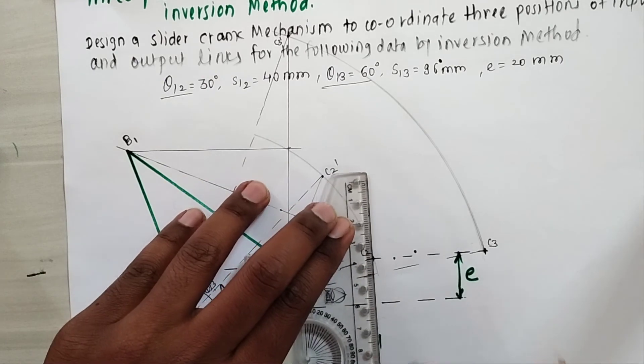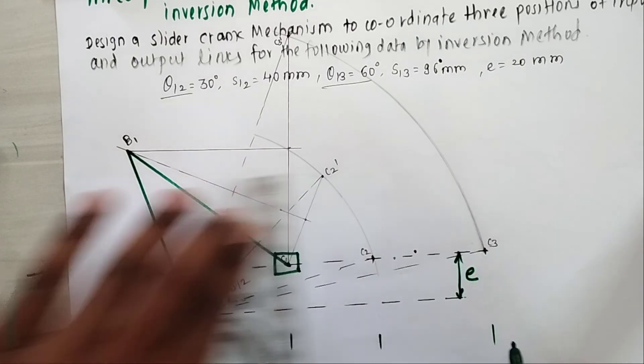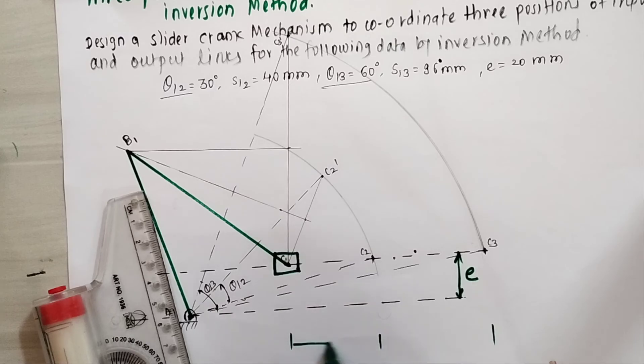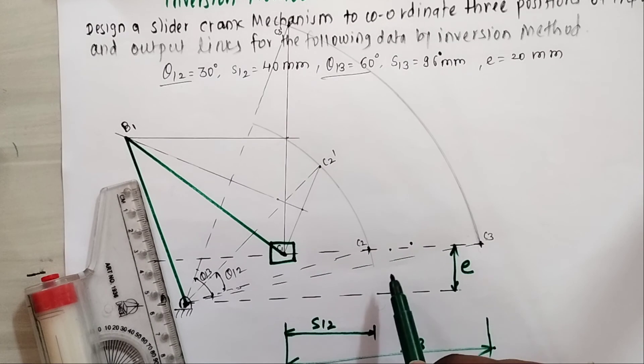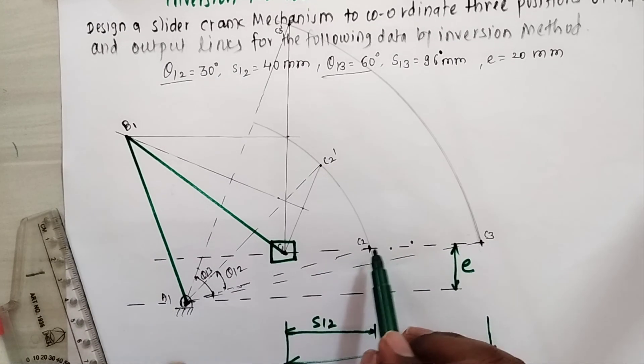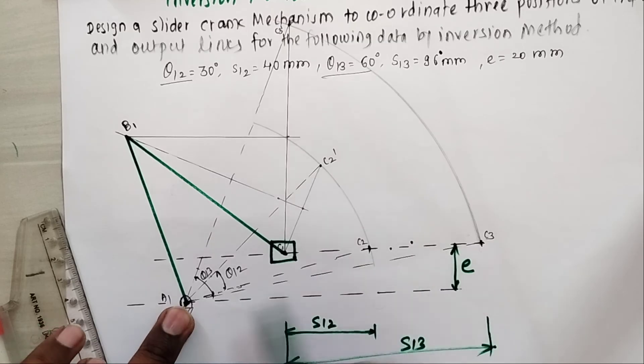This distance C1C2 is equal to S12, and this distance C1C3 is equal to S13. Get points C2 and C3 at corresponding distances. Then join A1C2 and A1C3.